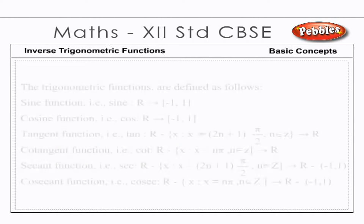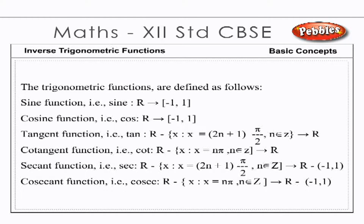The trigonometric functions are defined as follows: sine function, sin: R → [−1, 1]; cosine function, cos: R → [−1, 1]; tangent function, tan: R − {x : x = (2n+1)π/2, n ∈ Z} → R; cotangent function, cot: R − {x : x = nπ, n ∈ Z} → R; secant function, sec: R − {x : x = (2n+1)π/2, n ∈ Z} → R − (−1, 1); cosecant function, cosec: R − {x : x = nπ, n ∈ Z} → R − (−1, 1).